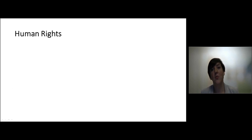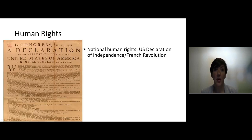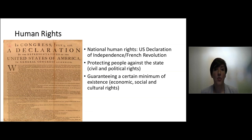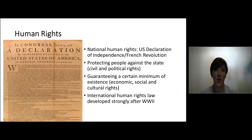Now we have the branch of human rights law. Human rights were already quite dominant during the time of the US Declaration of Independence and the French Revolution, acknowledging that people had certain freedoms — freedoms that would protect people against their governments. Mainly during the Industrial Revolution, we saw that there should also be a certain minimum for people to exist, and these are the economic, social, and cultural rights. International human rights law took a big flight after the Second World War, and we now have a vast body of international human rights documents. That will be the topic of next week.